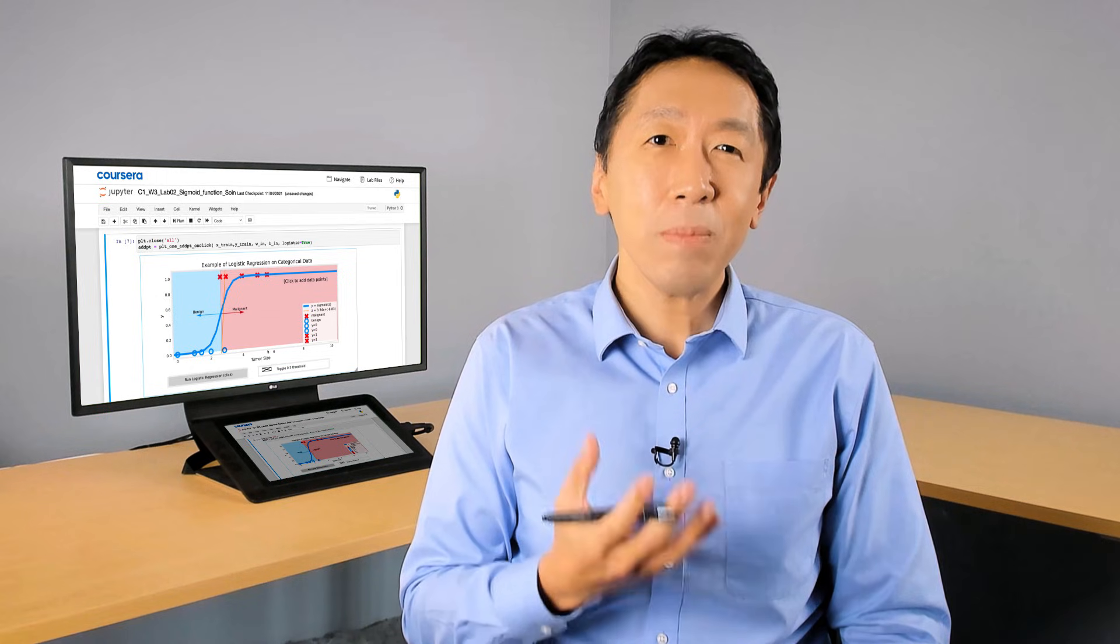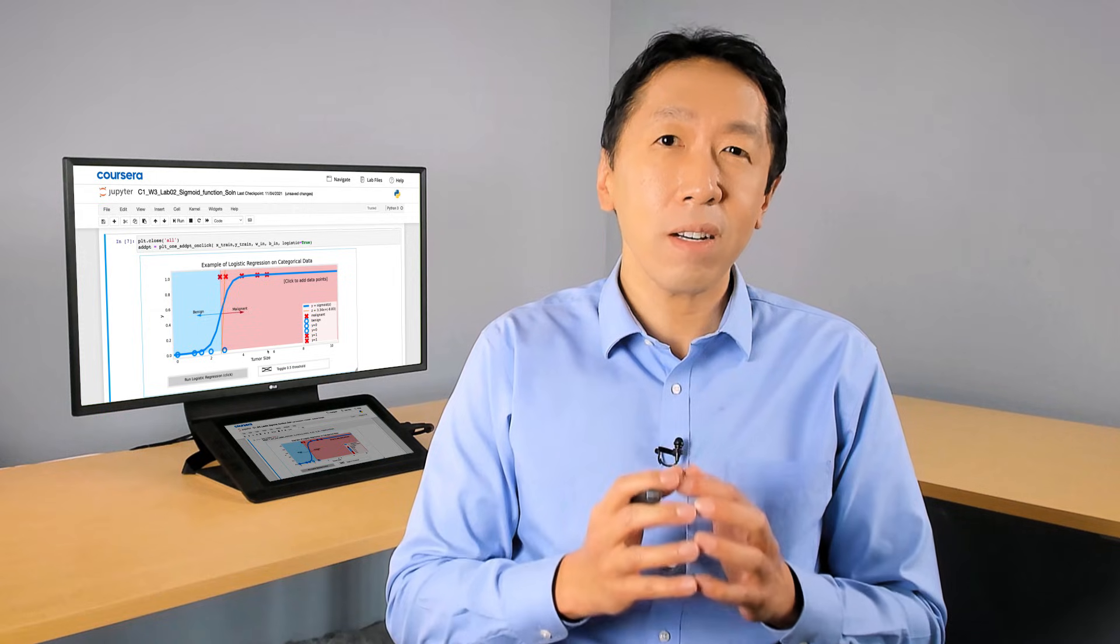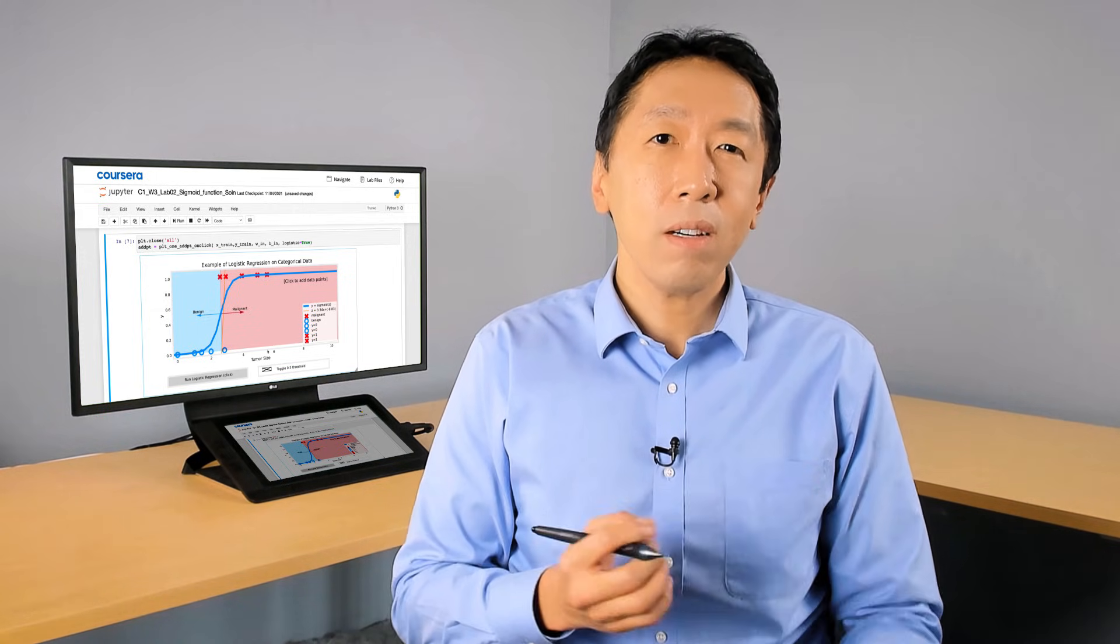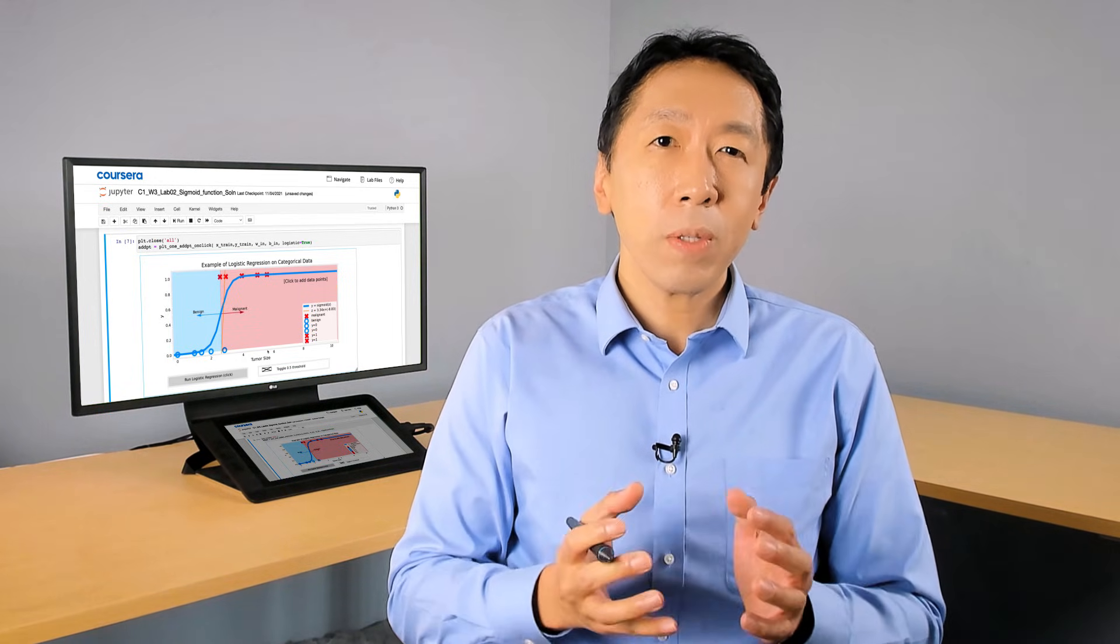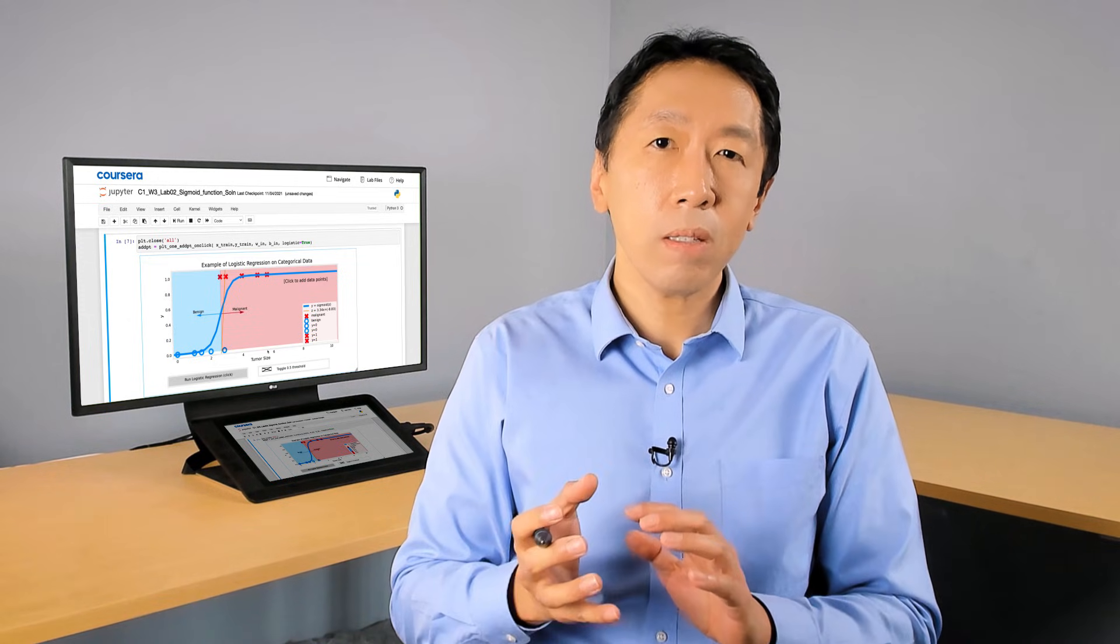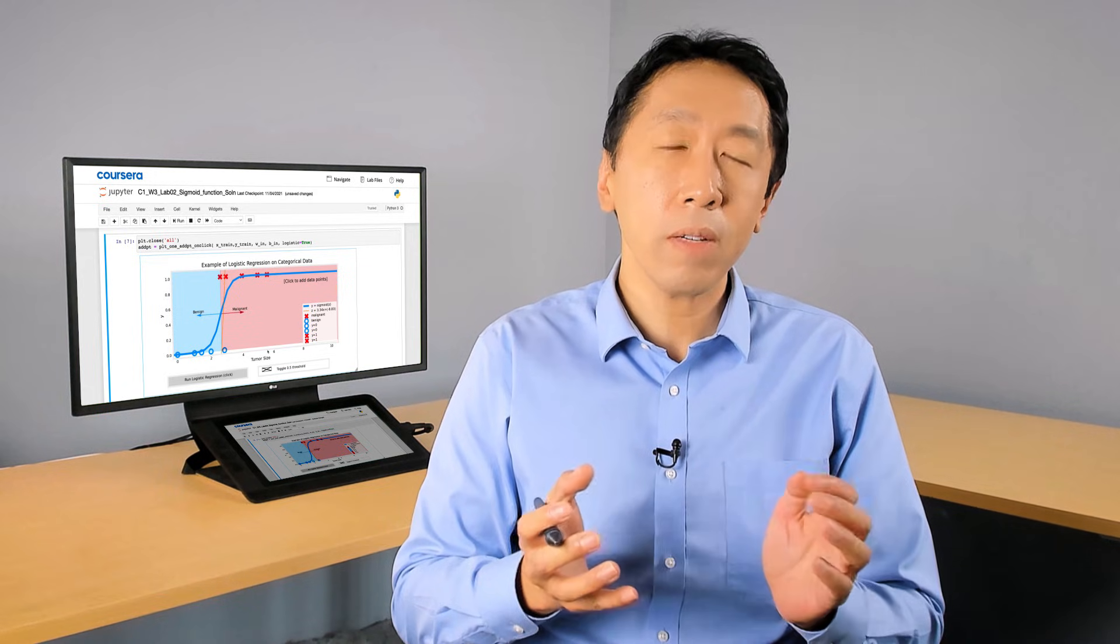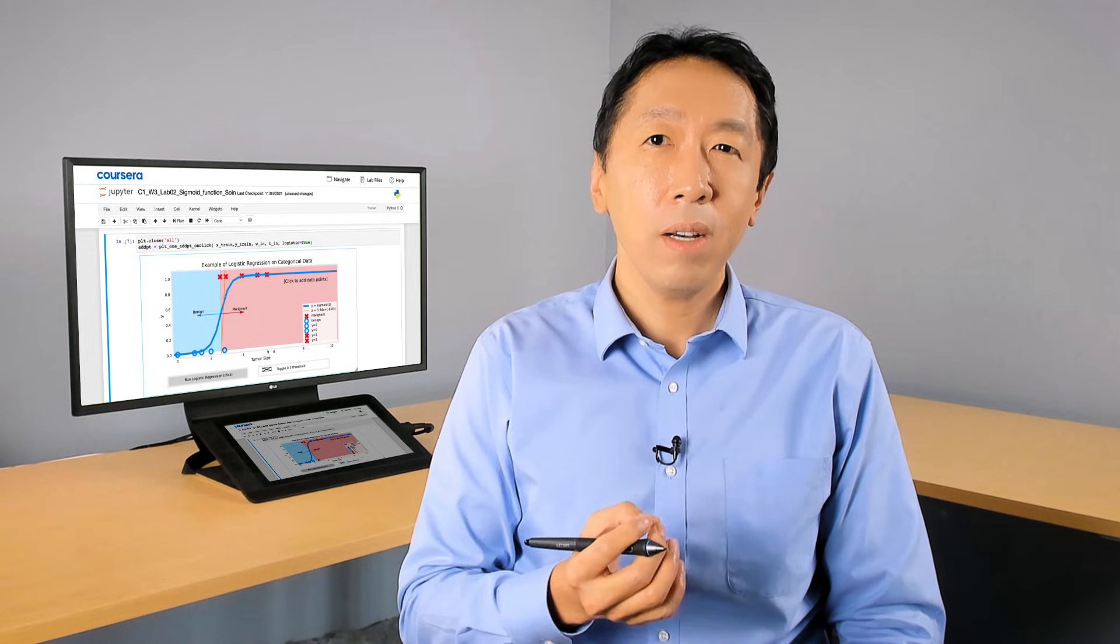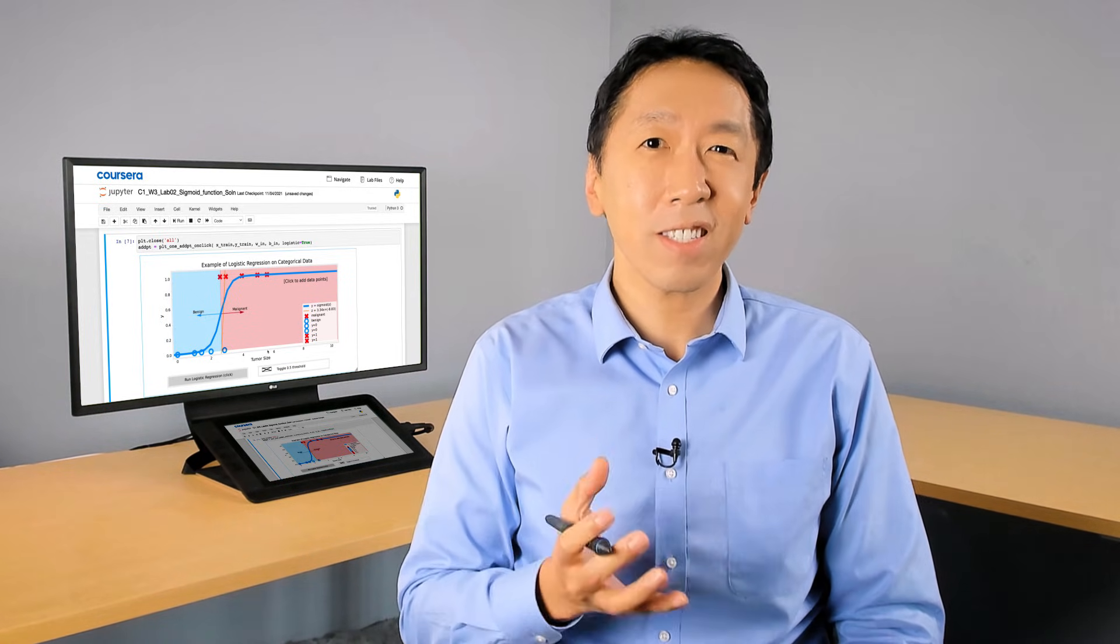Now, there's even more to learn about this algorithm. In the next video, we'll take a look at the details of logistic regression. We'll look at some visualizations and also examine something called the decision boundary. This will give you a few different ways to map the numbers that this model outputs, such as 0.3 or 0.7 or 0.65 to a prediction of whether y is actually 0 or 1. So, let's go on to the next video to learn more about logistic regression.